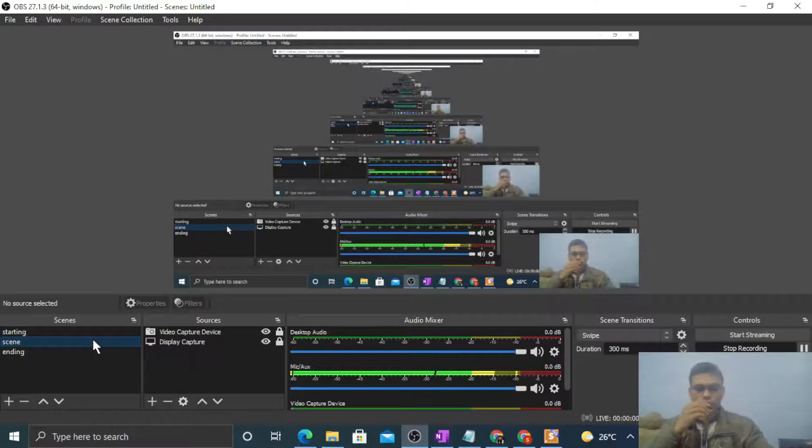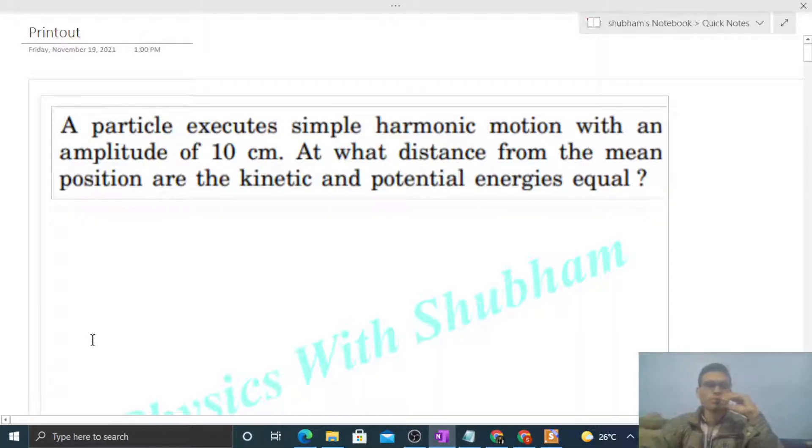Okay, hi everyone. So today let's discuss one interesting problem. It says a particle executes simple harmonic motion with an amplitude of 10 centimeters. At what distance from the mean position are the kinetic and potential energies equal?